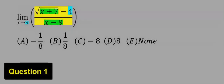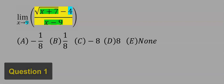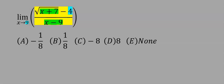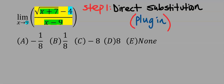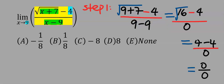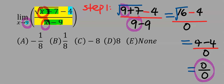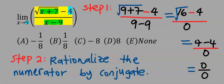Let's consider this question — a rational limit function with a square root at the numerator. Note that the square root at the numerator does not extend to minus 4. The first step is to apply direct substitution, that is, plugging into the function wherever we see x. We substitute 9 and we get 0 over 0, which is indeterminate.